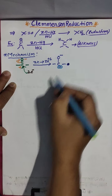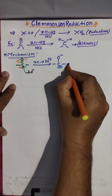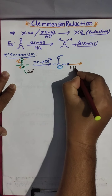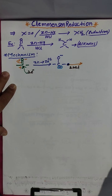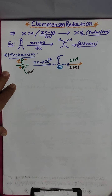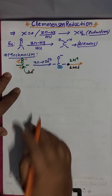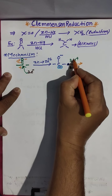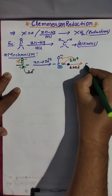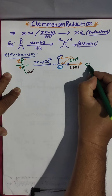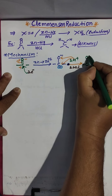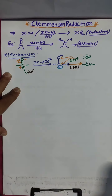Next, the reaction takes place in the presence of two moles of HCl. HCl provides two H⁺ ions. One hydrogen goes to carbon and one hydrogen goes to oxygen, giving a C–H bond and an O–H group with a lone pair.